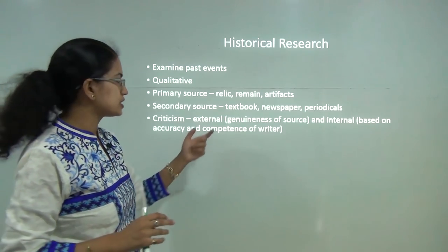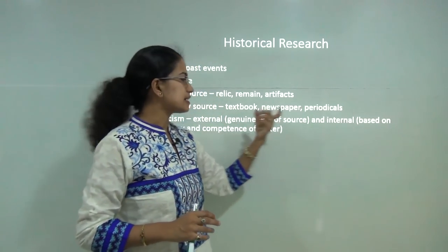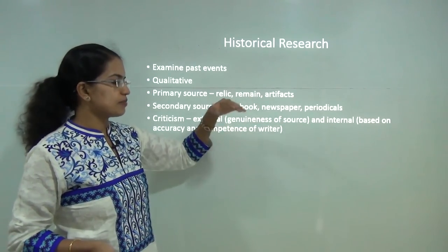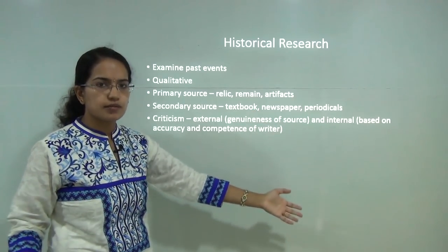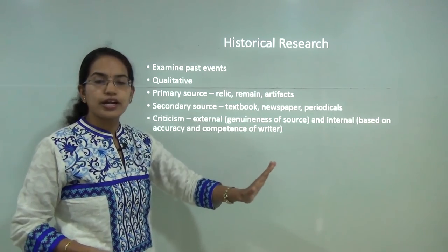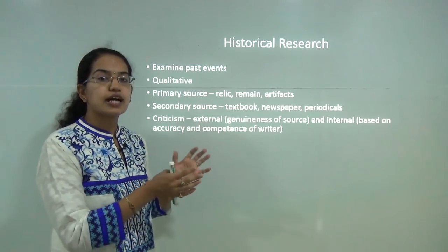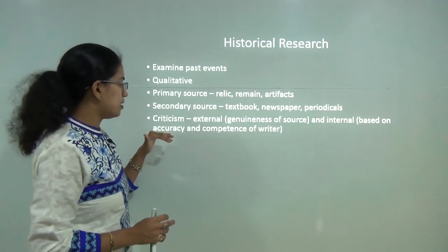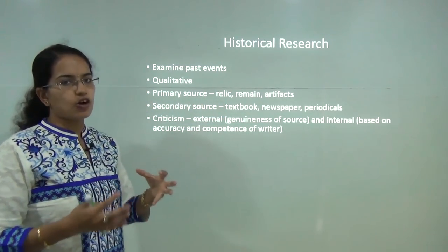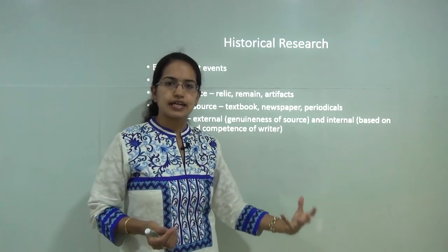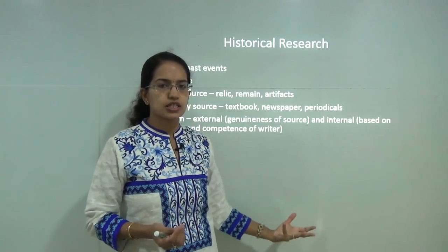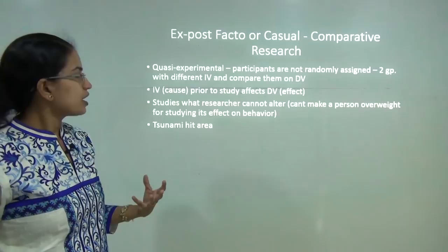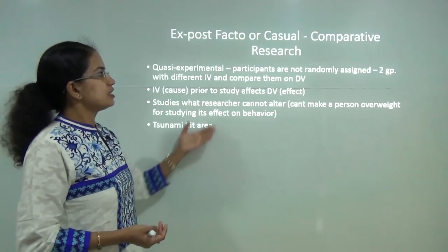Secondary sources for historical research include textbooks, newspapers, periodicals, and journals. The criticism for historical research can be divided into external criticism and internal criticism. External criticism says the source being used is not genuine — for example, a relic that is not actually as old as the Harappan civilization. Internal criticism talks about the accuracy and competence of the writer — the person writing in the periodical or journal is not competent, or there are flaws in the accuracy of the information.